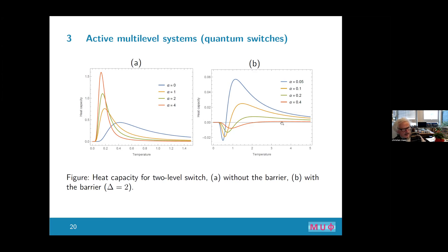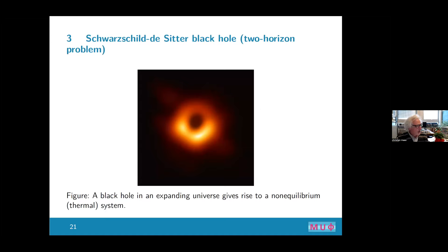If you increase the kinetic barrier, something interesting happens: you get negative heat capacity. It still goes to zero at zero temperature, but you get regimes at low temperature where the heat capacity is negative. This has nothing to do with stability versus instability as in the canonical ensemble for equilibrium, where it is always positive. Here it is very well possible and interesting — it really has to do with population inversion, which I will come to later.